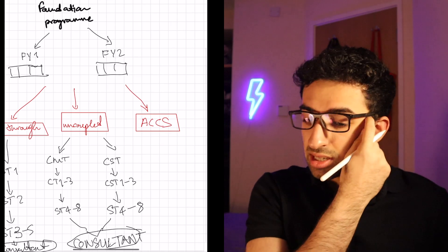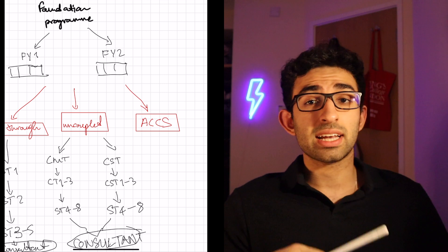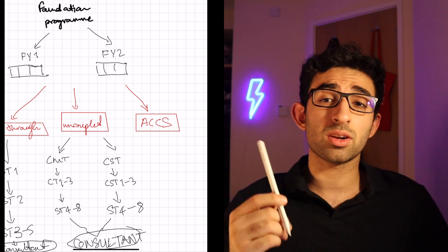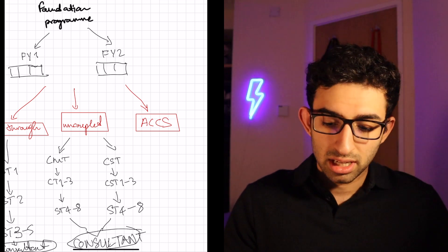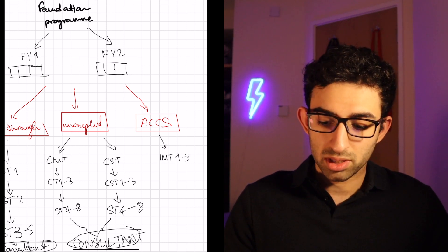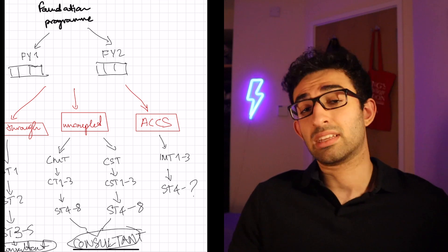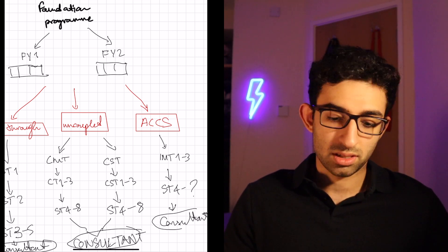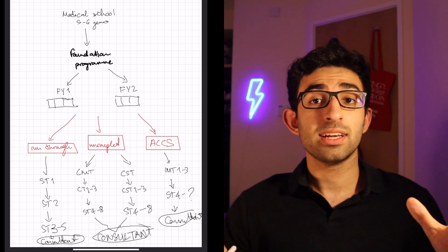And the third one is acute care common stem. As we said earlier, acute care common stem, that's something that you have to do if you want to practice emergency medicine. And it's something you can look into if you want to do acute internal medicine or general internal medicine as well or anesthesiology. Here, you basically have to do internal medicine training, years 1 to 3, after which you start your ST training, say, ST4 to how many of years there are for that particular program. After which, again, consultant. Right. So, those are all the specialty training programs available in the UK.